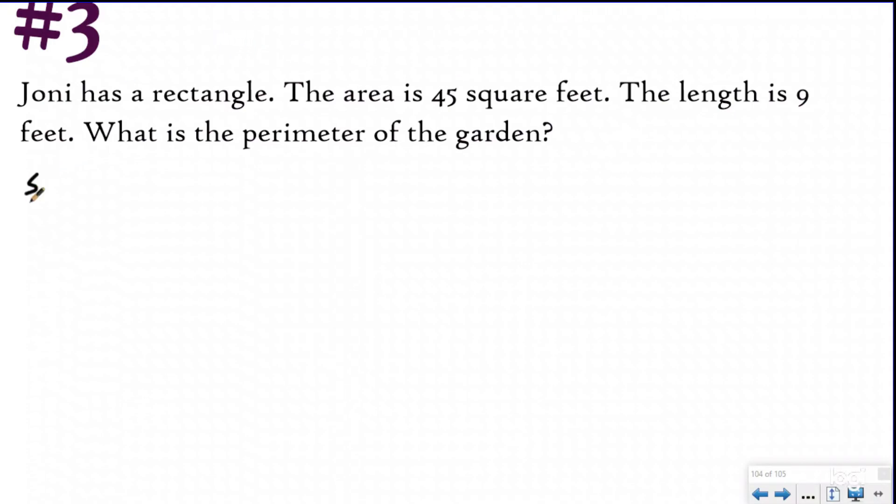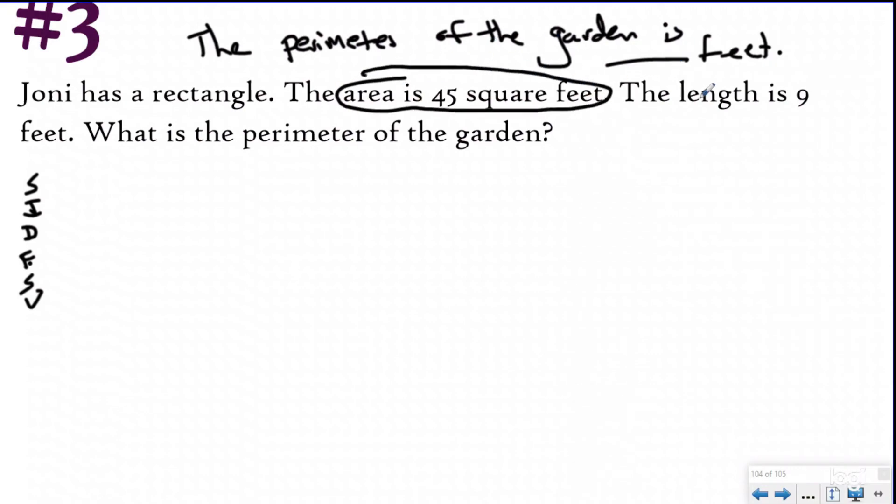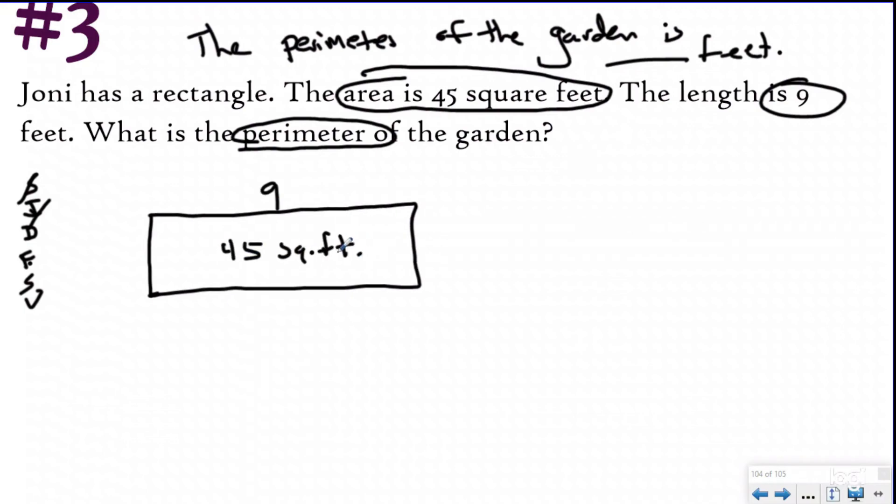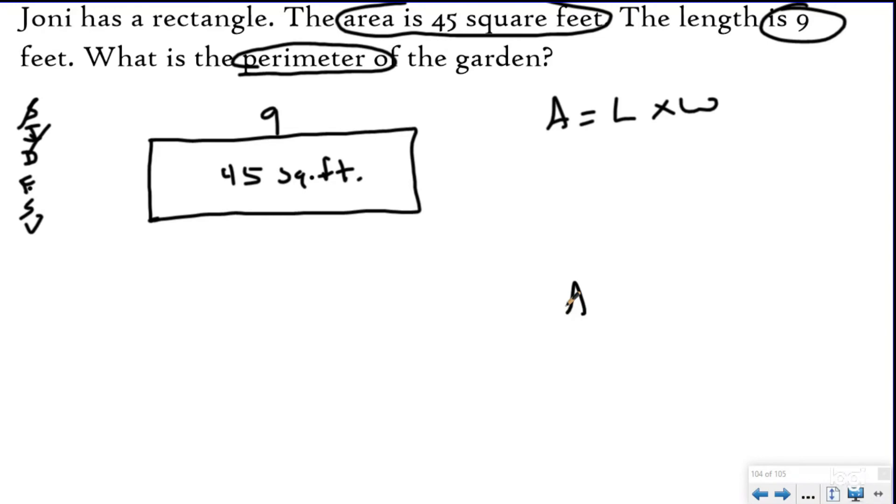First of all, I'm following my SIDES CHECK strategy, because this is Instructor Beats and we love SIDES CHECK. My statement's going to say the perimeter of the garden is blank feet. When I go back, I'm looking for anything about the garden, anything about feet. The area is 45 square feet, the length is nine feet, and you want to know the perimeter. When I developed my plan, we needed to draw out our rectangle and label what we know. We know the length is nine, we know the area is 45 square feet, and we know our area formula is length times width.